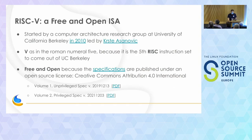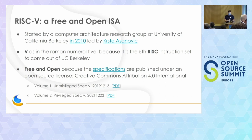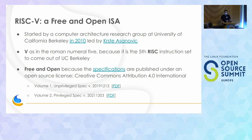I just spoke about RISC-V, but just for people that weren't there, just to kind of level set the conversation. RISC-V is a free and open ISA. It was started back in 2010 at Berkeley. The V stands for the Roman numeral five because it's the fifth instruction set to come out of Berkeley. The reason why it's free and open is because the specifications are published under an open source license.